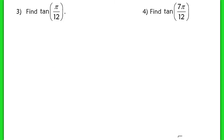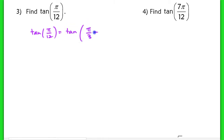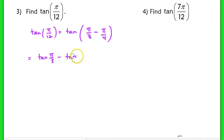In problem 3, we're going to evaluate tan of pi over 12 similarly to how we evaluated cosine of 105 yesterday. Pi over 12 is not an angle measure we have memorized, so we break it up: tangent of pi over 12 equals tangent of pi over 3 minus pi over 4. If I take pi over 3 minus pi over 4, I get pi over 12. Using the tangent subtraction formula: tangent of pi over 3 minus tangent of pi over 4, all over 1 plus tangent of pi over 3 times tangent of pi over 4.